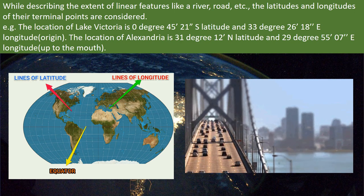The river Nile flows towards north and meets the Mediterranean Sea near the city of Alexandria in Egypt. The location of Lake Victoria is 0 degree 45 minutes 21 seconds south latitude and 33 degree 26 minutes 18 seconds east longitude. The location of Alexandria is 31 degree 21 minutes north latitude and 29 degree 55 minutes 7 seconds east longitude.